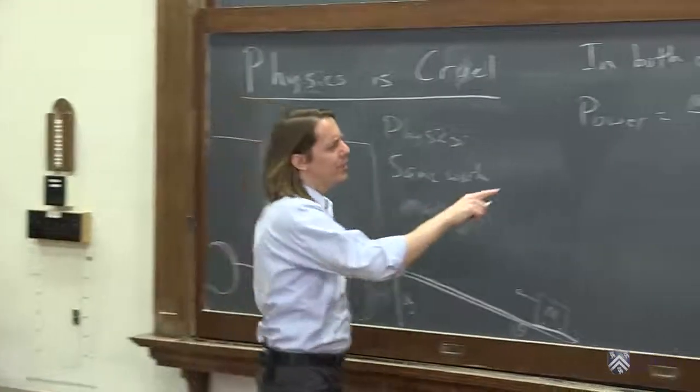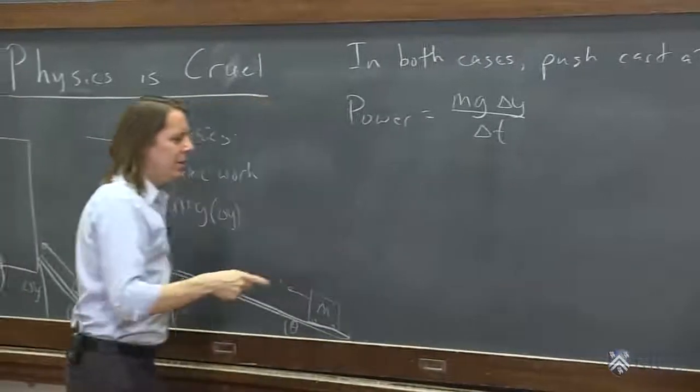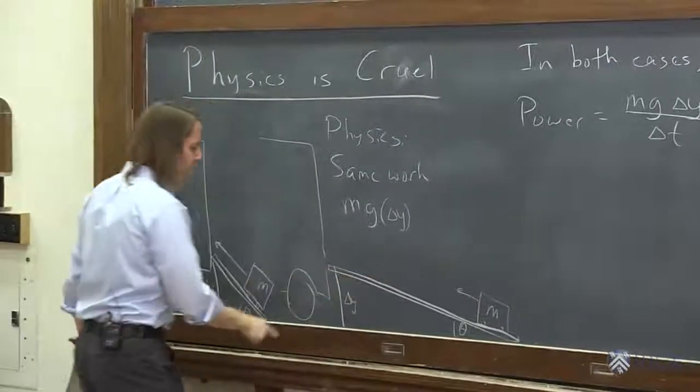But we're going at a constant velocity. So then what do we call delta t? Well, I guess it takes longer here because we're going farther.